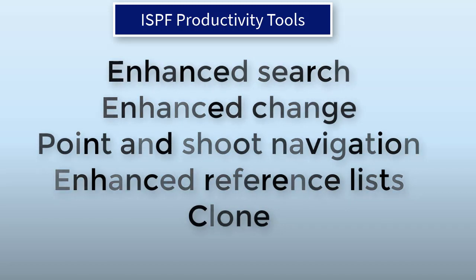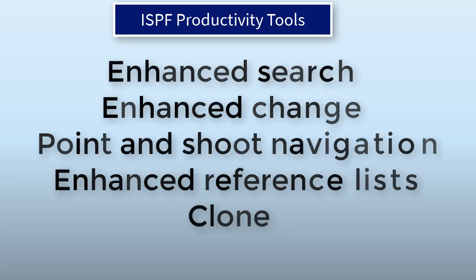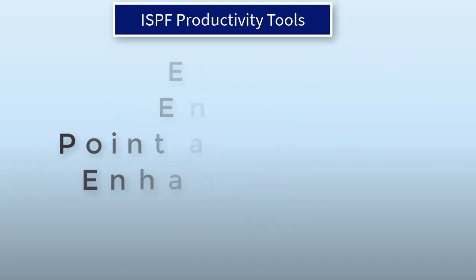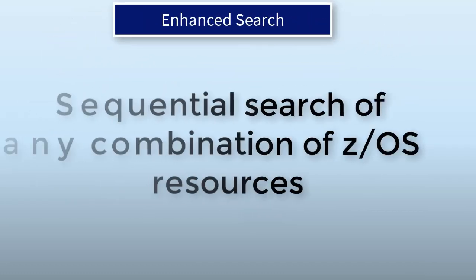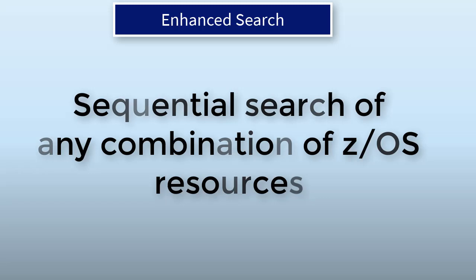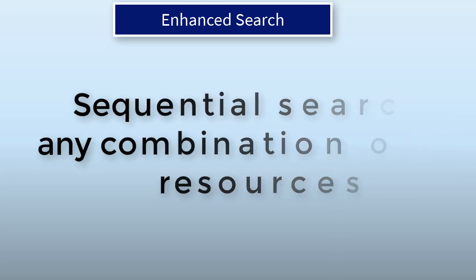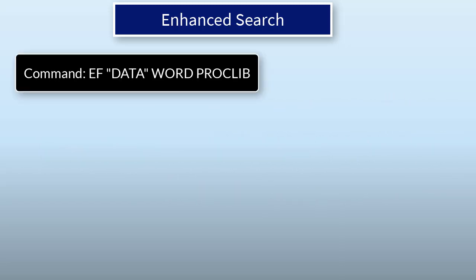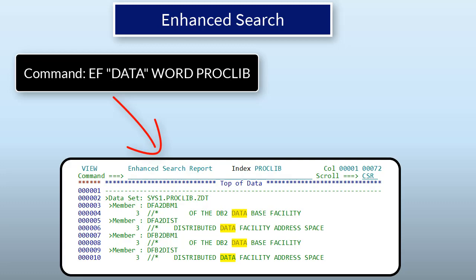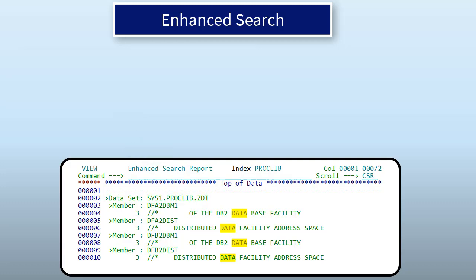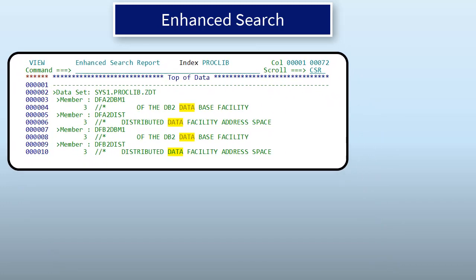The clone utility is a simple way to move your data around on the mainframe. The ZDT Enhanced Search Facility provides a sequential search of any combination of ZOS resources. For example, this command will search for the word 'data' in our active ProcLib datasets. A search report is produced showing the locations and records where the string was found.